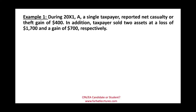Comprehensive example: In Year X1, a single taxpayer reported a net casualty theft gain of $400. The taxpayer also sold two assets — a loss of $1,700 and a gain of $700. The non-casualty assets net to a loss of $1,000. Since the overall result is a net loss, there is a separate ordinary loss of $1,000 and ordinary income of $400, for an overall ordinary loss of $600 for Year X1.